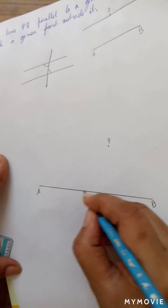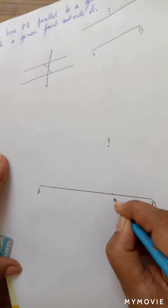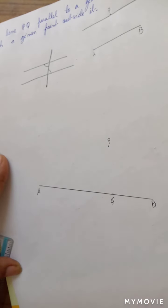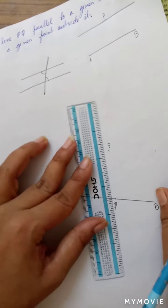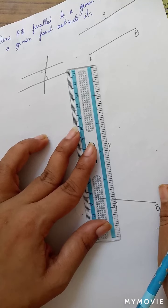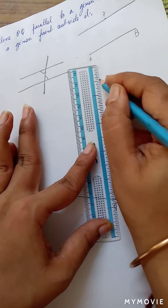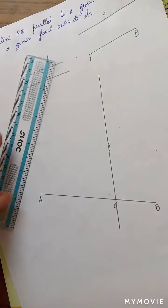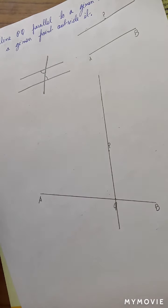Now, on AB, take a point Q. Again, anywhere of your choice. And now, join PQ. You know what we will do now.